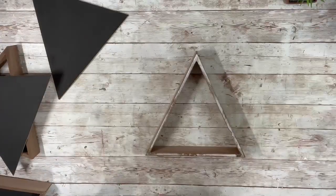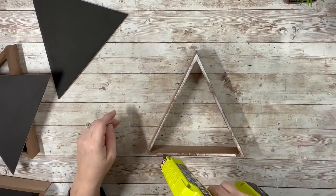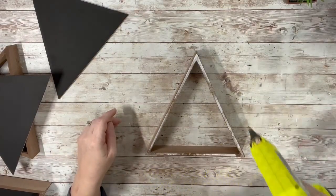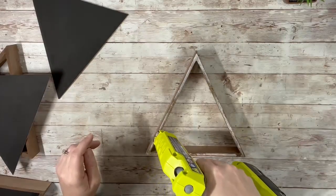Once everything was dry, I took my hot glue and put that on the back side of the wooden triangle and then placed down the backing on there and just did that to all three of them.